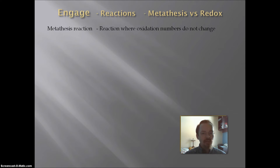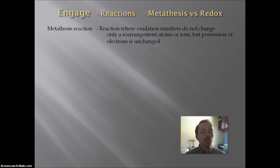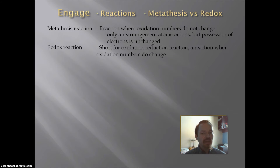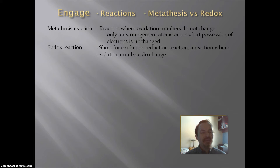In a metathesis reaction, the oxidation numbers do not change. So what that means is we're only rearranging atoms or ions, but the possession of electrons is unchanged. The other type of reaction is a redox reaction. Redox is short for oxidation-reduction reaction, and this is a reaction where the oxidation numbers do change — meaning at some point in the reaction, there is a movement of electrons from one atom to another.